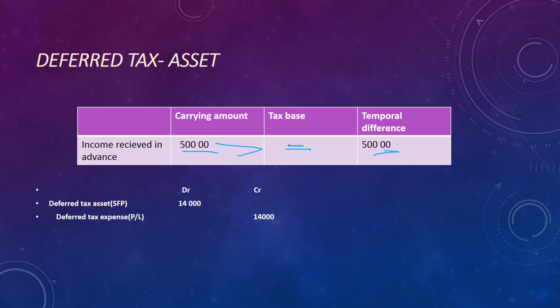Income received in advance is a liability. This is not something that we recognize in the profit or loss statement — we recognize it on the liability side of the financial position statement. As a result, the carrying amount of the liability is greater than the tax base of the liability. This will result in amounts which are deductible in the future for tax purposes. We make this provision by debiting our deferred tax asset by $14,000 and crediting our deferred tax expense by $14,000, which is 28% of the $50,000 temporary difference.